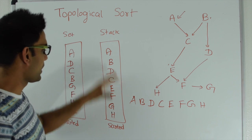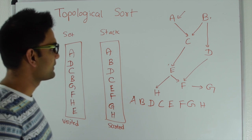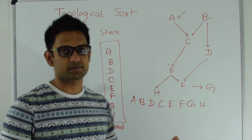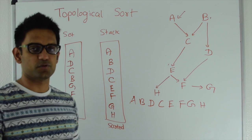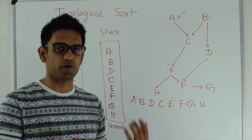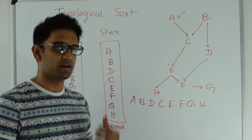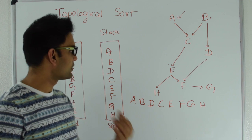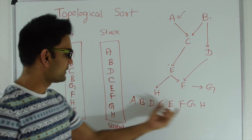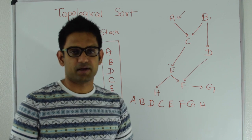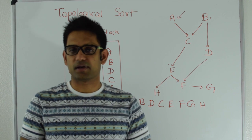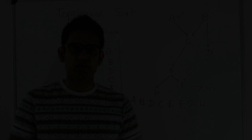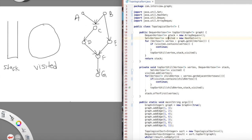All valid orderings share the property that if there's a vertex u and v with an edge going from u to v, u will always appear before v in the ordering. In the next section, let's look at the code.